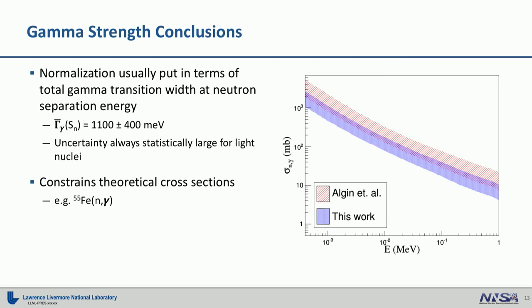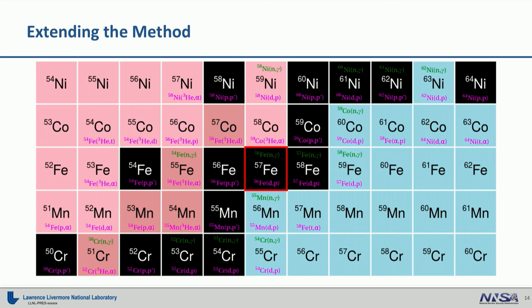I can then plug this into other codes that determine cross-sections for radiation transport. So if I want to know a cross-section of iron-55, which is radioactive, I can't go into a lab and measure it. I have to use something like this gamma strength normalization into my code to constrain a cross-section.